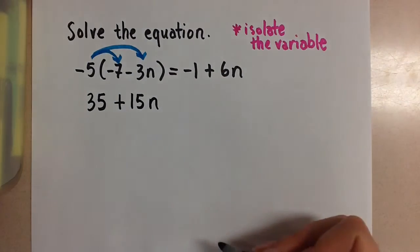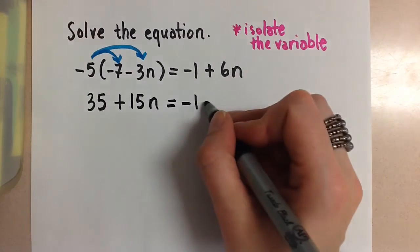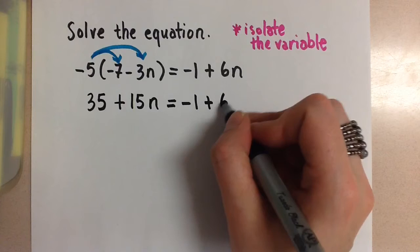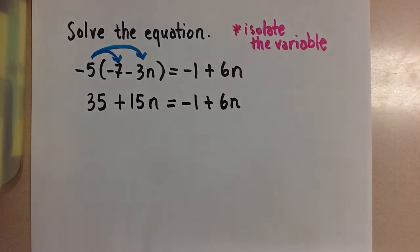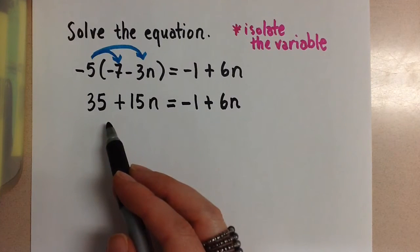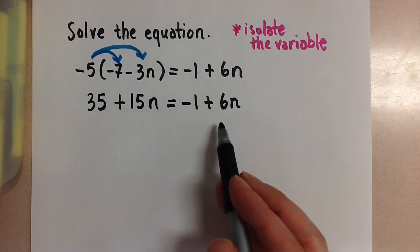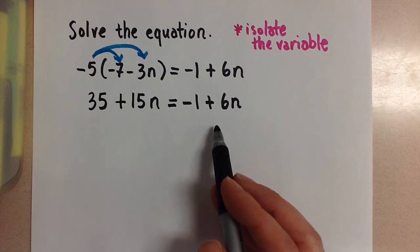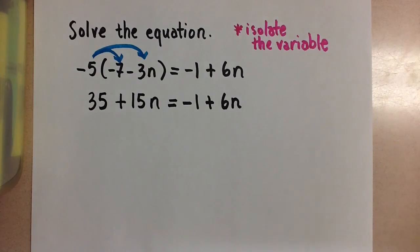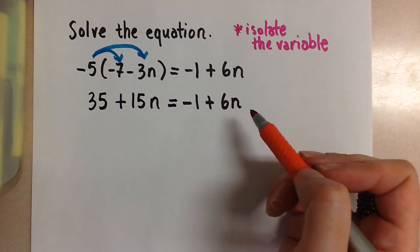That's the left side of the equation. Now on the right side of the equation, the negative 1 plus 6n stays the same for now. Now we're going to collect like terms so that the variables are on one side of the equal sign and the numbers — the constants — are on the other side of the equal sign. That's how we're going to get n by itself.